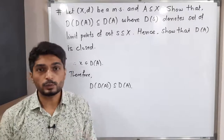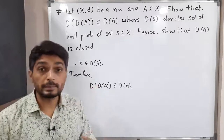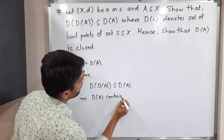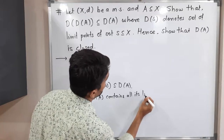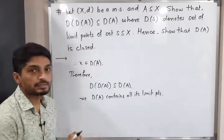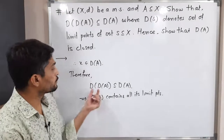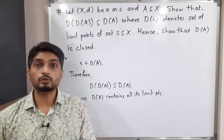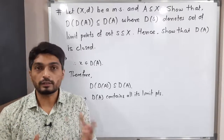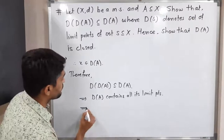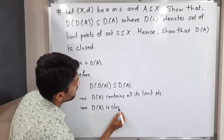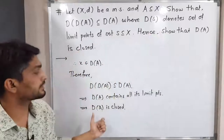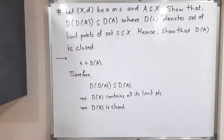We can write the same result in another way: D(A) contains all its limit points. Since D(D(A)) is a subset of D(A), D(A) contains all its limit points. We know that if any set contains all its limit points, then that set is a closed set. Therefore, D(A) is closed, since it contains all its limit points. In this way, we have proved the second part also and completed this example.